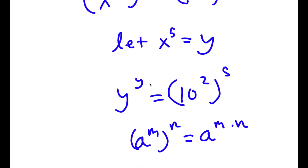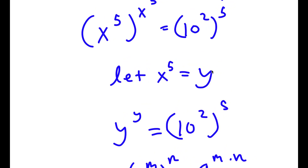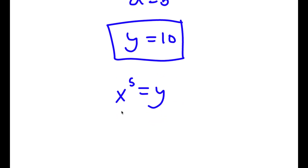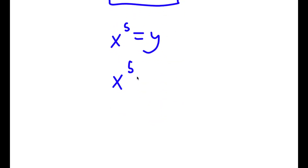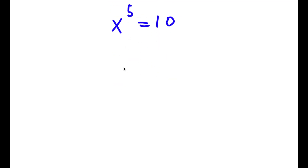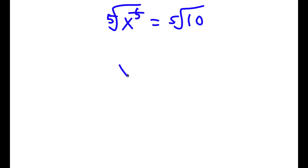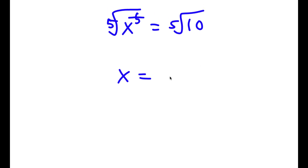However, we aren't done yet, because remember we said x to the power of 5 is equal to y. So if x to the power of 5 equals y, and y equals 10, then x to the power of 5 is equal to 10. To solve this, I'm going to take the fifth root on both sides, so these cancel out and x is equal to the fifth root of 10, which can also be written as 10 to the power of 1 over 5.